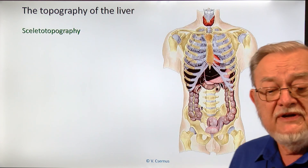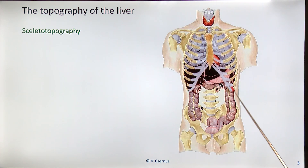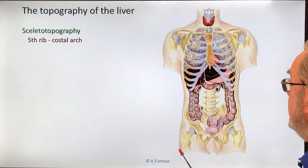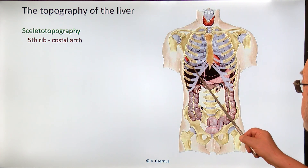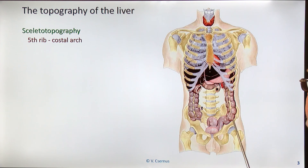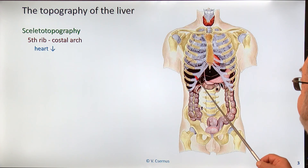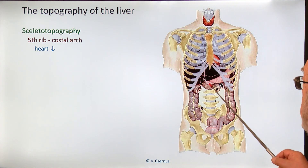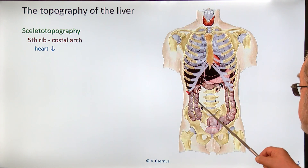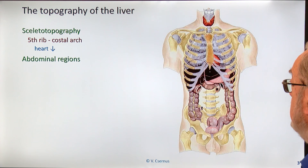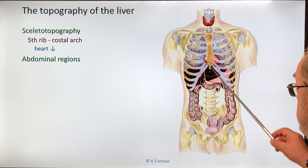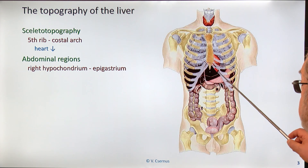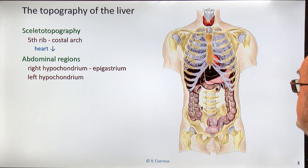Now let's see where the liver is located in the body. The skeletal topography describes where an organ is positioned relative to the skeleton. The fifth rib is a key structure marking the top of the liver. It is located in the abdominal cavity but pushed up into the ribcage, all the way up to the fifth rib. The left side is a little lower because the heart sits on top and pushes it down. Below, the liver must not extend below the costal arch in a normal liver — if it does, we have a pathological condition. Most of the right lobe is in the right hypochondrium, passing partially into the epigastrium, with the left lobe occupying a small area of the left hypochondrium.